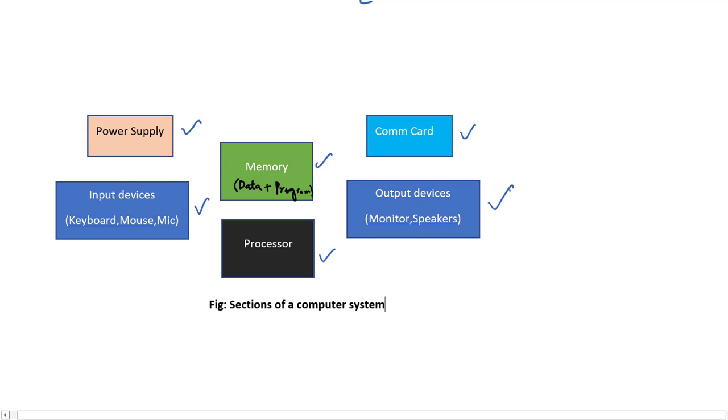There is a memory, a processor, a communication card, and there are devices like monitor and speakers. What happens in a typical computer system? Through input devices like keyboard, mouse, and microphone, the data is sent to the computer memory.